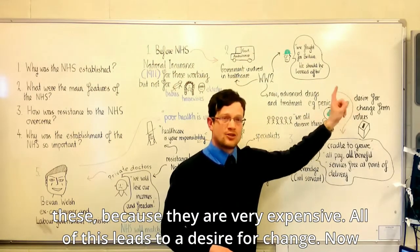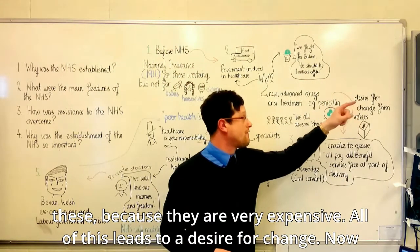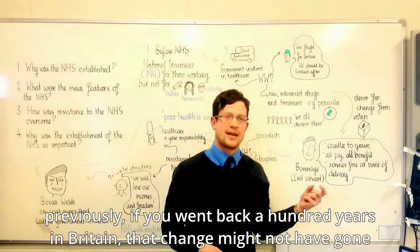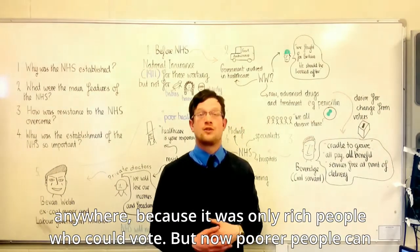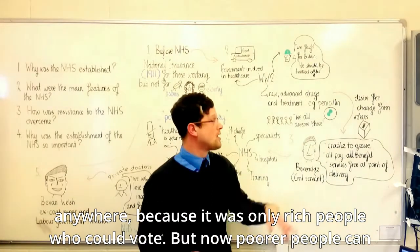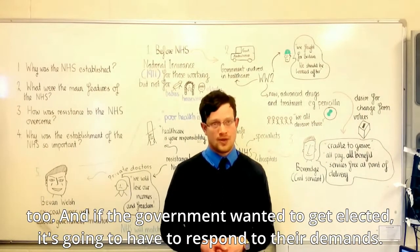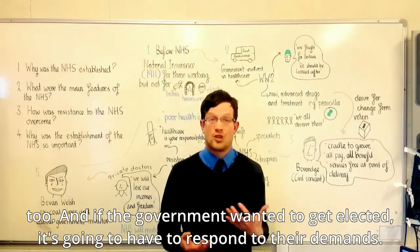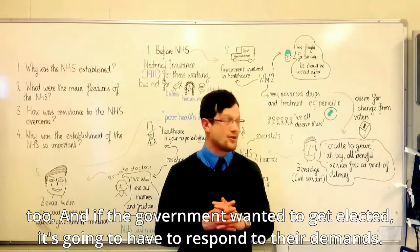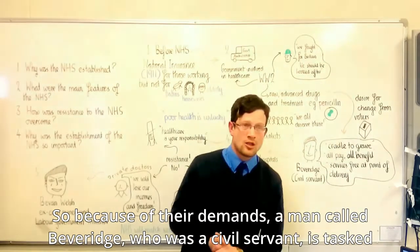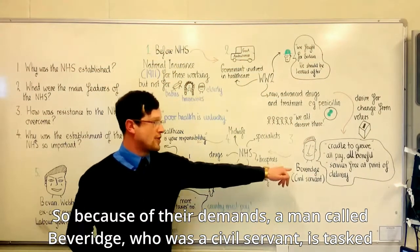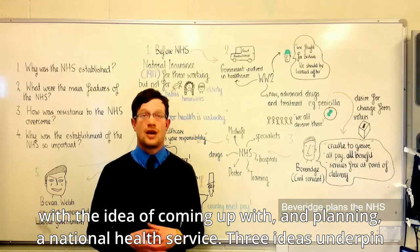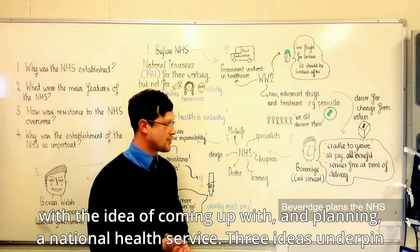All of this led to a desire for change. Previously, if you went back 100 years in Britain, that change might not have gone anywhere, because only richer people could vote. But now poorer people could vote too, and if the government wanted to get elected, it had to respond to their demands. So because of their demands, a man called Beveridge, who was a civil servant, was tasked with planning a national health service.